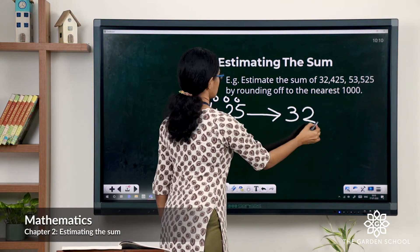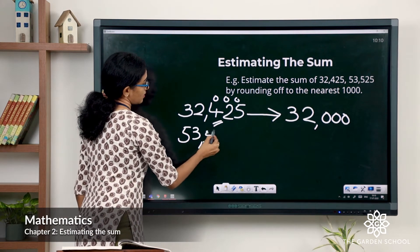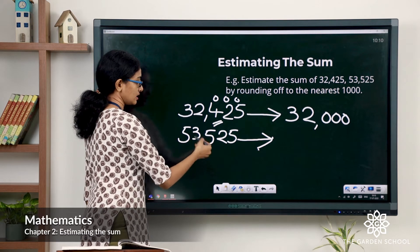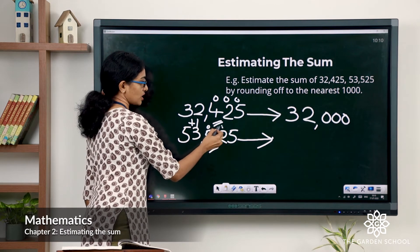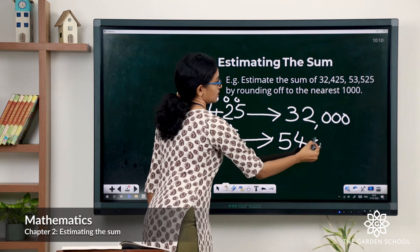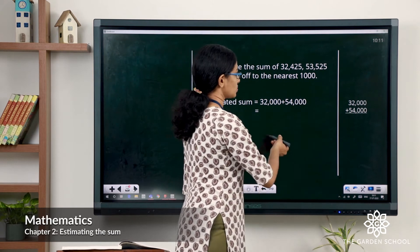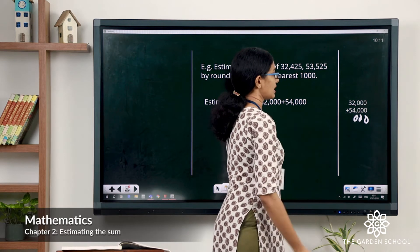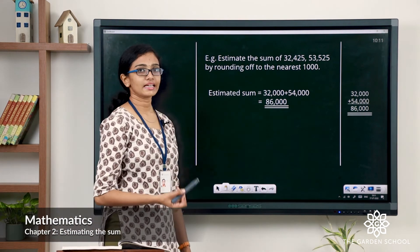So 32,425 rounded to the nearest thousand gives you 32,000. Now the next addend, 53,525: the rounding digit is 3 and the digit to the right of it is 5, so add 1 to the rounding digit and change all digits to the right to zeros. That gives you 54,000. Now let's find the estimated sum by adding the rounded addends: 0, 0, 0, 4 plus 2 is 6, and 5 plus 3 is 8. So the estimated sum is 86,000.